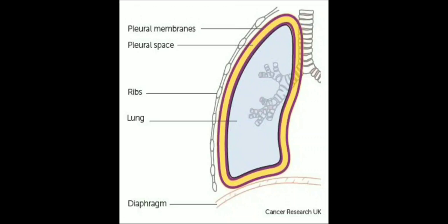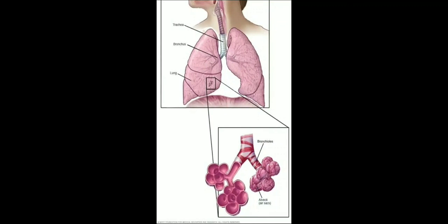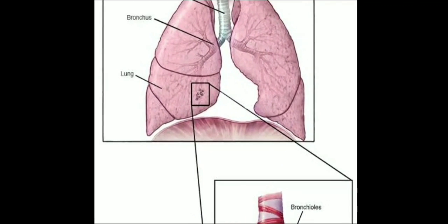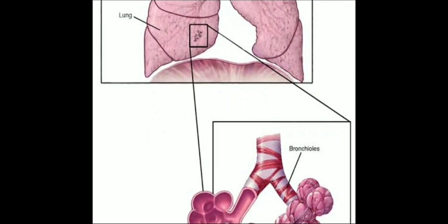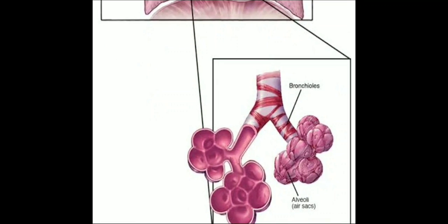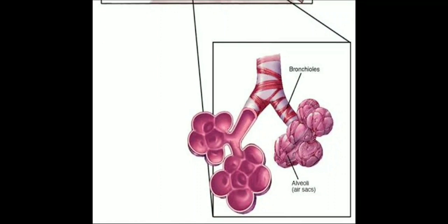Along with this, the ribs present outside also help protect the lung from any form of outward damage which might be caused in our day-to-day activity. Now as we observe the inner structure of the lung, we observe that each lung is provided with a bronchus, and these bronchi get further divided into smaller structures called bronchioles. Each bronchiole gets further divided and subdivided into smaller structures called alveoli.